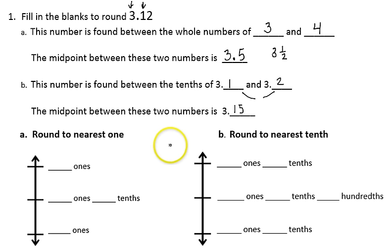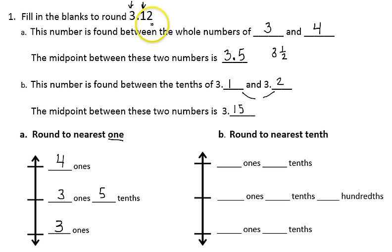Now let's use these numbers to help us round the original number. We're going to round the original number to the nearest 1, or to the nearest whole number. The number is in between 3 and 4, so 3 would be the smallest number it could round to and 4 would be the greatest. The midpoint between those two numbers is 3 ones and 5 tenths. Since my number has 3 ones and 1 tenth, it falls below the midpoint. Since the number is below the midpoint, we would round this number to 3 ones. So 3 and 12 hundredths rounded to the nearest 1 would equal 3.